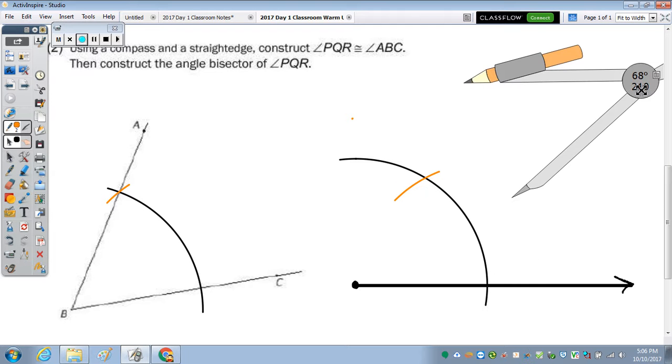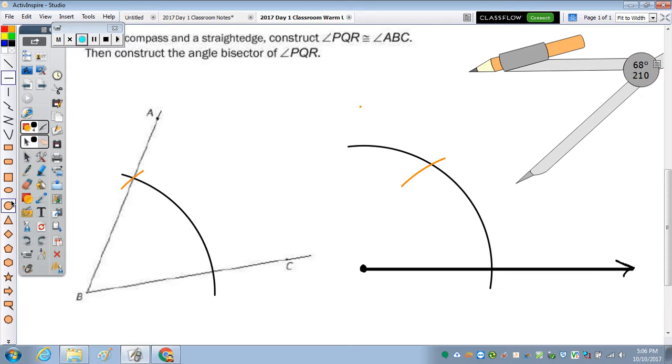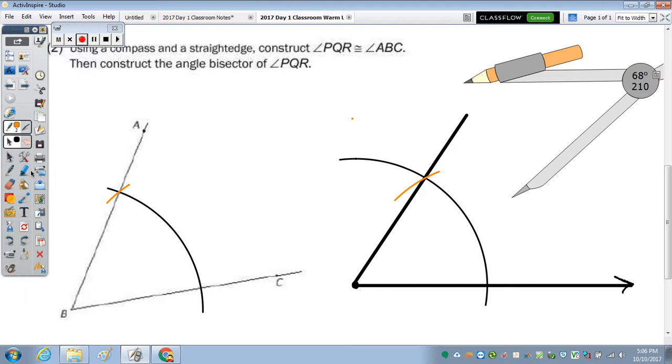So I'm going to put that to the side, as I still need it. Now I'm going to take and draw a ray from the vertex of my new angle through that point of intersection. So here's an angle that's congruent.